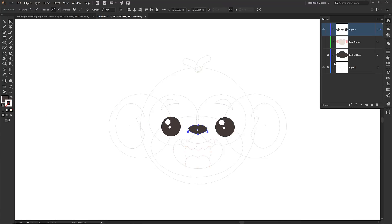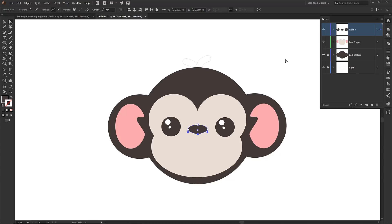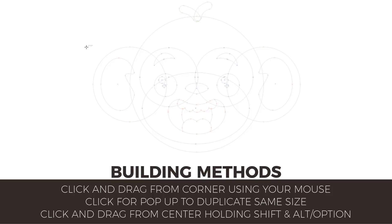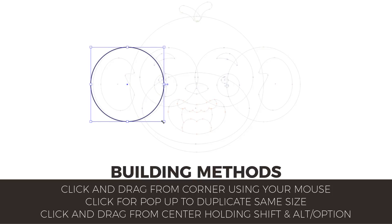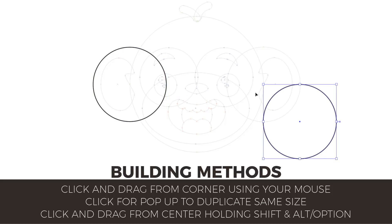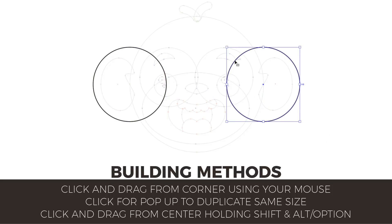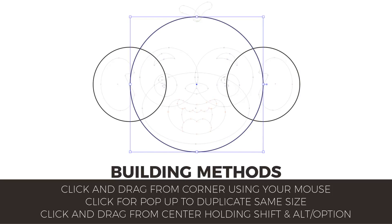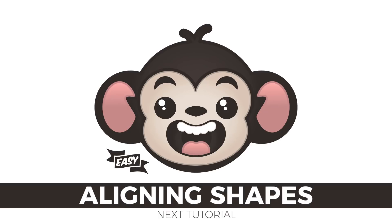Press Control Zero to zoom all the way out and bring everything back — we're done with this tutorial. Three things to practice when building with shapes: first, click and drag from the corners (usually hold Shift for a perfect circle); second, just clicking gives you a pop-up to duplicate an existing shape; third, hold Shift and Alt from the center point and drag out — that's my preferred method. In the next tutorial we'll be aligning all these shapes using the Align panel to make everything nice and perfect.